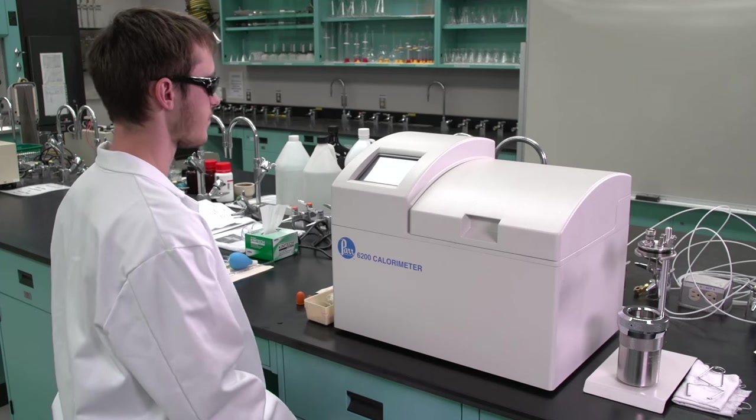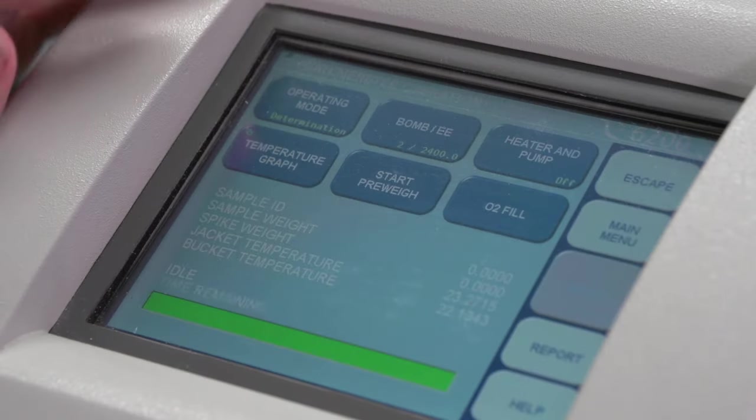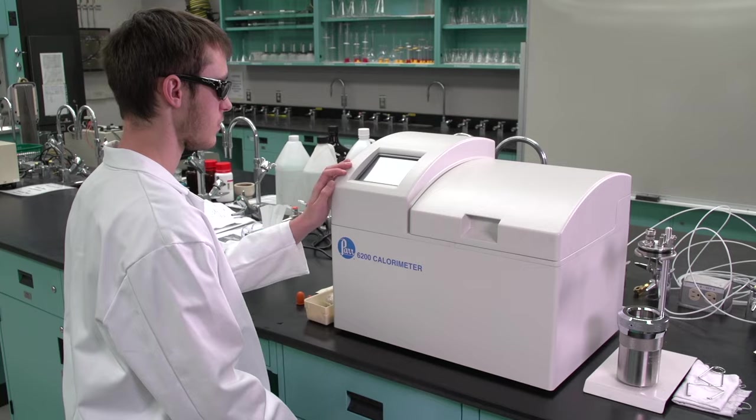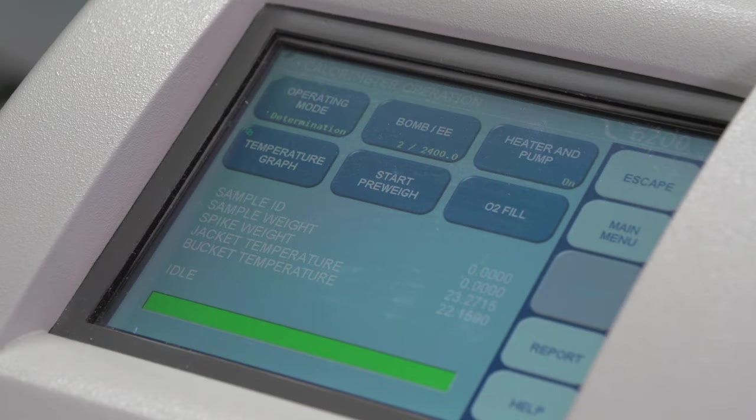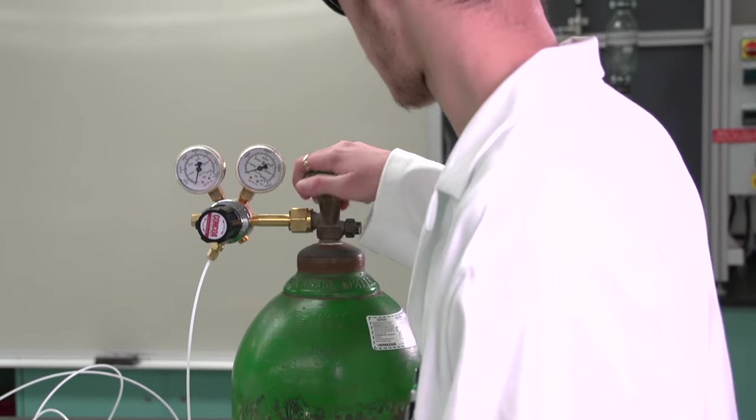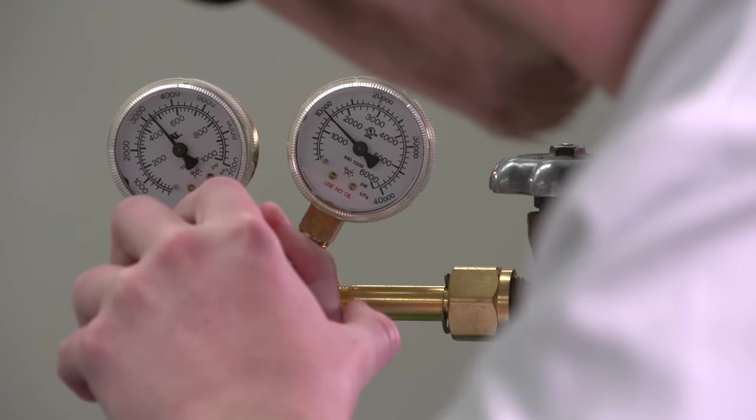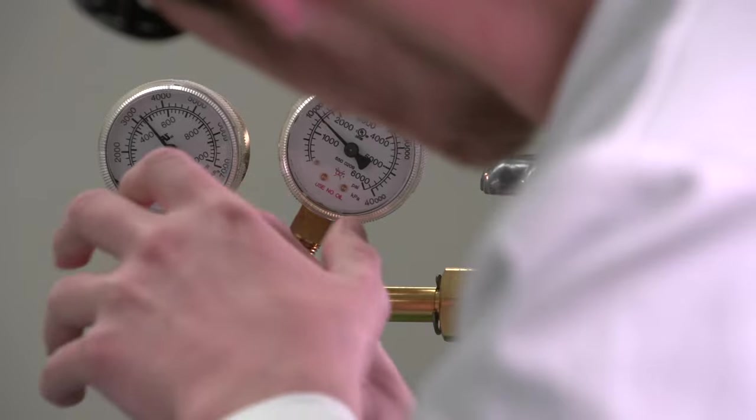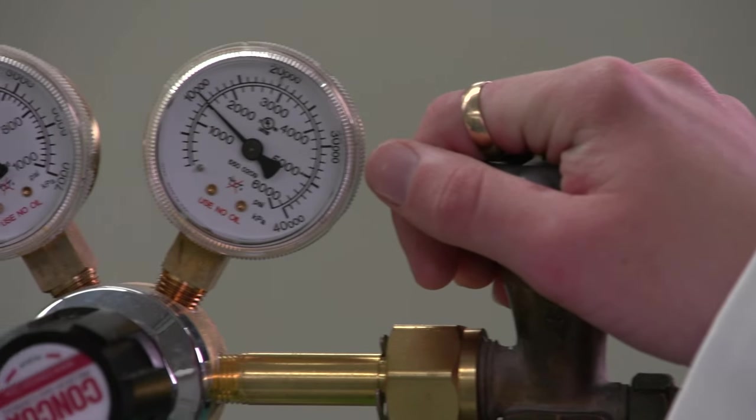On the main menu of the instrument, push the calorimeter operation button. Start the heater and pump by using the heater and pump button. Open the valve on the oxygen gas cylinder. The pressure regulator should indicate 450 psi. Allow 20 minutes warm-up time.